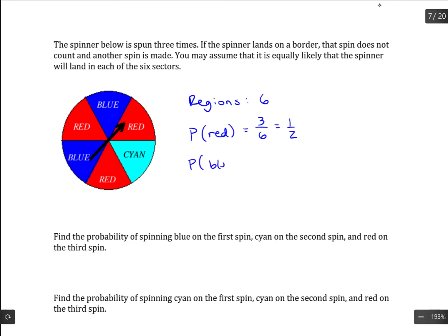The probability of blue, since there are two blue regions out of the six, would be two sixths or one third. And the probability of cyan, there's one out of six there.